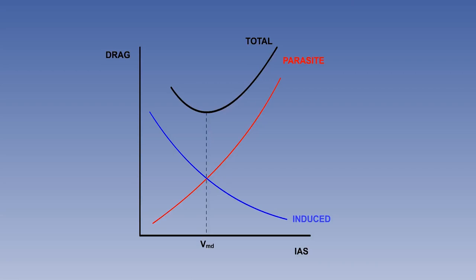Range, endurance, glide, manoeuvre, landing and take-off performance are all based on some relationship involving the aeroplane total drag curve.